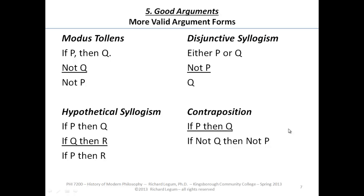Here are some additional valid argument forms, or valid argument patterns. We're going to start in the upper left corner. If P then Q, not Q, therefore not P. Valid — it's something called modus tollens. P is the antecedent, Q is the consequent. Not Q is denying the consequent of the if-then, sometimes known as denying the consequent — a valid form of argument.